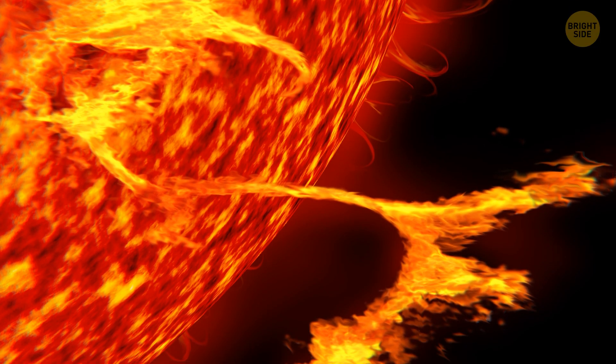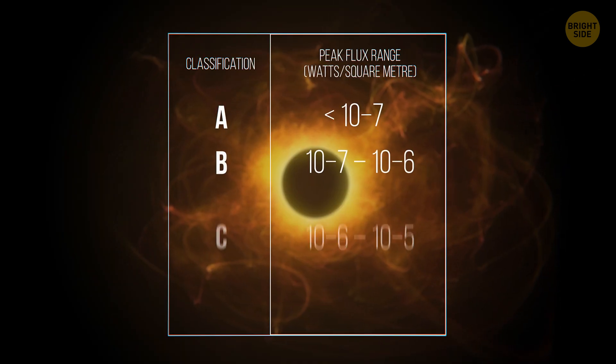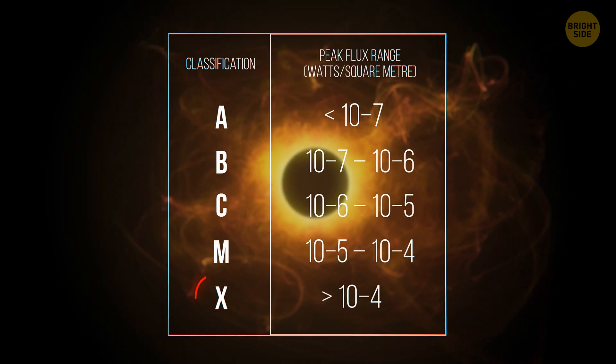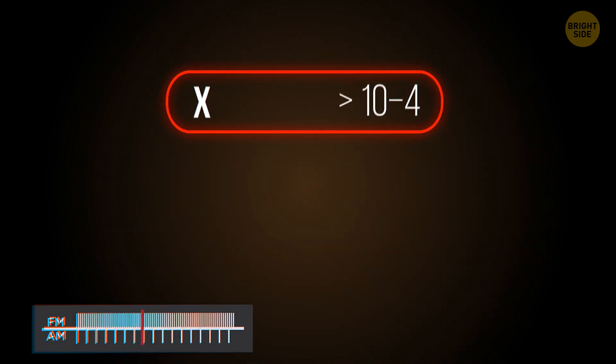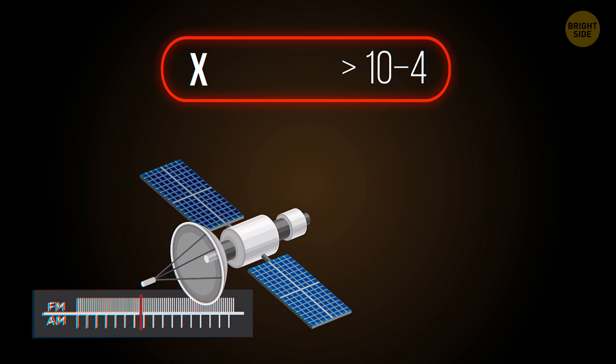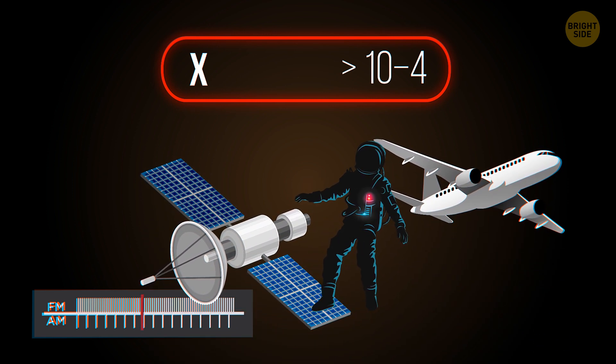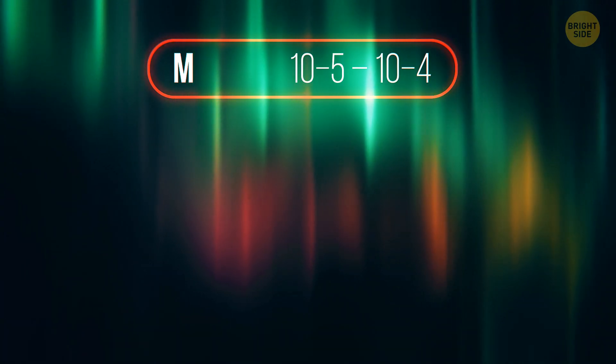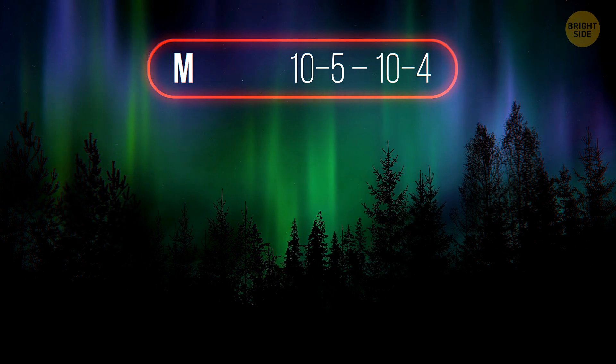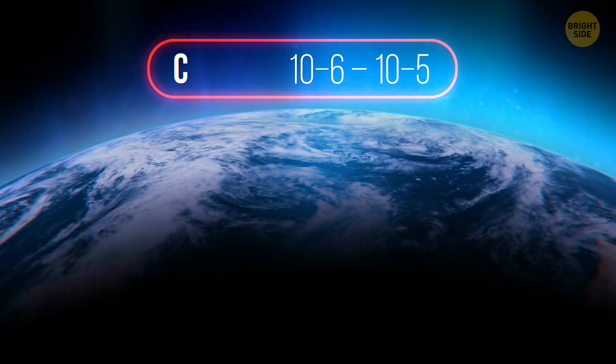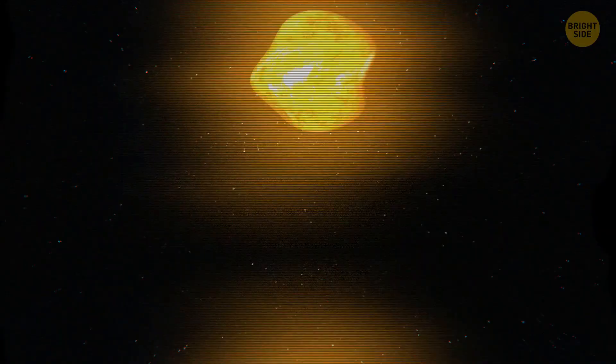Solar flares have a classification system, according to how powerful they are. X-class solar flares are the most dangerous. This type of solar flare can cause radio blackouts across Earth and harm satellites, astronauts in orbit, and even passengers on high-altitude airplanes. M-class solar flares cause spectacular aurora at the north and south pole areas on Earth, while C-class solar flares have almost no effect on Earth.